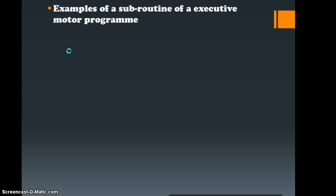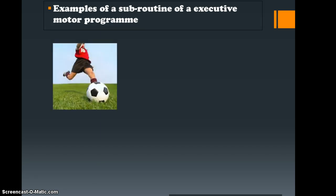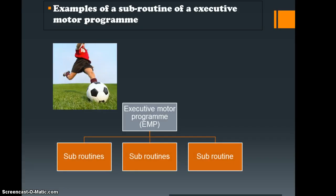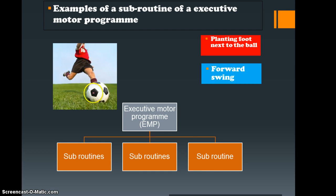Let's look at this in a different context. An example of a subroutine: if you've got someone kicking a ball, that's the executive motor program. What subroutines could you break that down into? Ones that I chose were planting the foot next to the ball, the forward swing, and then the follow through. Three subroutines associated with a very simple skill of kicking the ball, and that gives us our executive motor program skill.